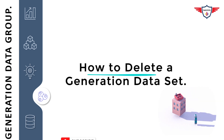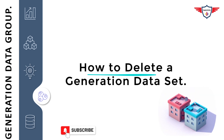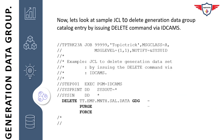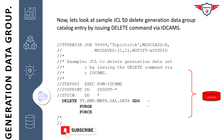Now let's look at a sample JCL to delete a GDG base and its generation data sets. Here is a sample JCL to delete generation data group catalog entries by issuing the DELETE command using IDCAMS. The first two lines are the job card, followed by comments explaining what the job does. An EXECUTE statement invokes IDCAMS. The DELETE command specifies the GDG base name followed by the keyword GDG, then PURGE and FORCE to delete the GDG base and all its generations.